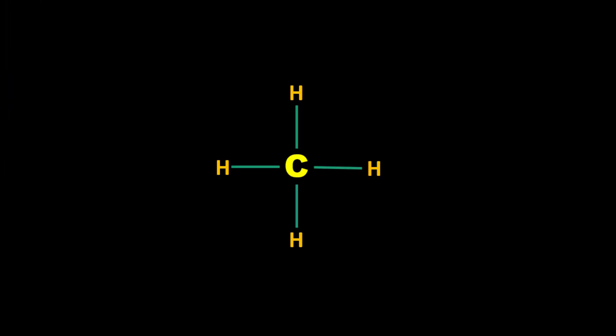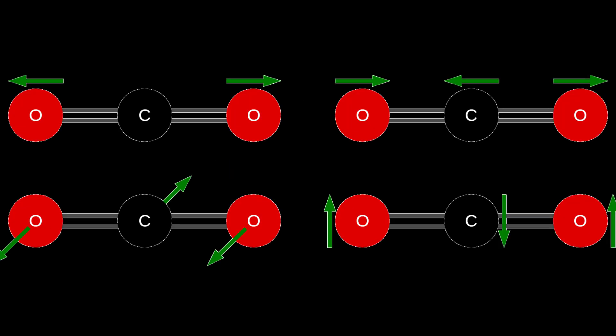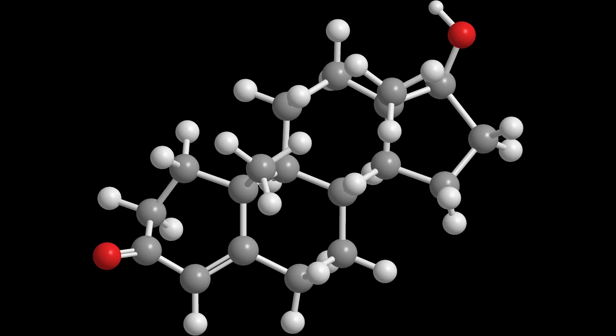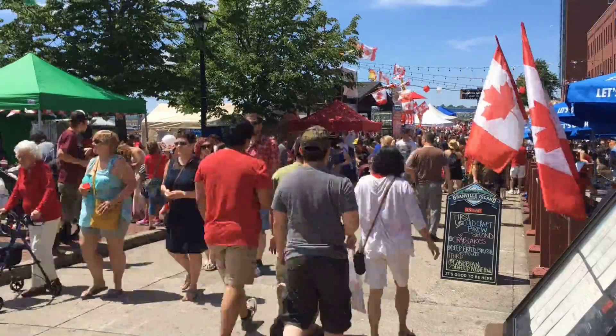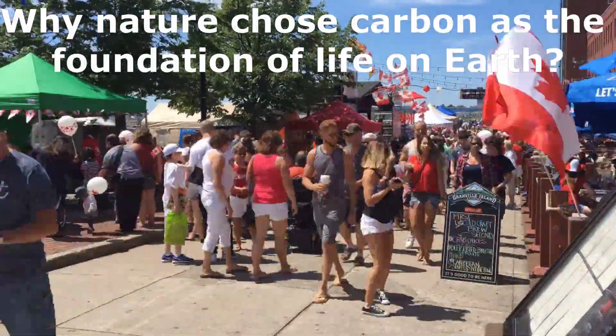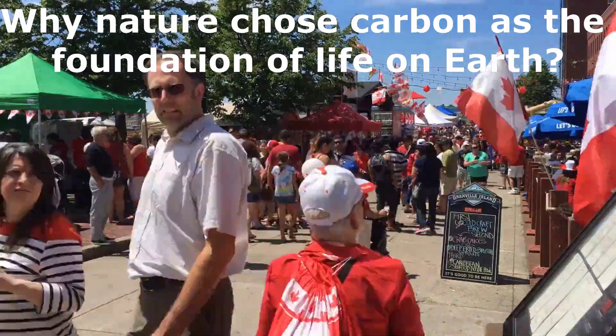To get 4 extra electrons, it can either form 4 single bonds, 2 double bonds or 1 triple bond plus a single bond. Therefore, carbon can form a wide variety of bonds which further adds to its versatility. Now, we will discuss reasons why nature chose carbon as the foundation of life on Earth.